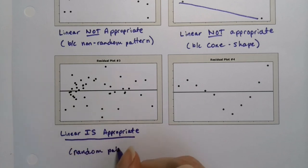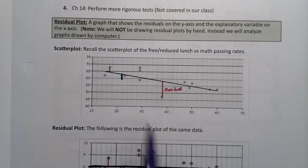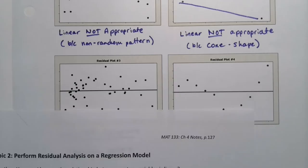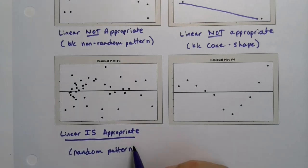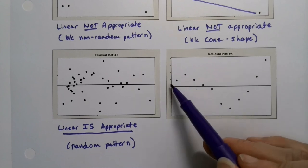You want a random pattern. I know it seems crazy. But basically, you want your diagonal line for your linear regression model to have random points dispersed around it. You don't want it to be all on one side or all on the other. You want the points to kind of all be evenly distributed around that line.